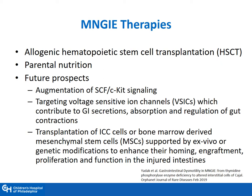Unfortunately, treatment has been minimal and is limited to stem cell transplantation in patients with MNGIE. Supportive help with parenteral nutrition is available. Given recent studies of the interstitial cells of Cajal, future prospects include augmentation of KIT signaling to produce improved smooth muscle cells, as well as targeting voltage-sensitive ion channels contributing to GI secretions, absorption, and regulation of gut contractions. Studies have supported transplantation of interstitial cells of Cajal or bone marrow-derived mesenchymal stem cells to enhance engraftment, proliferation, and function of the injured intestines.